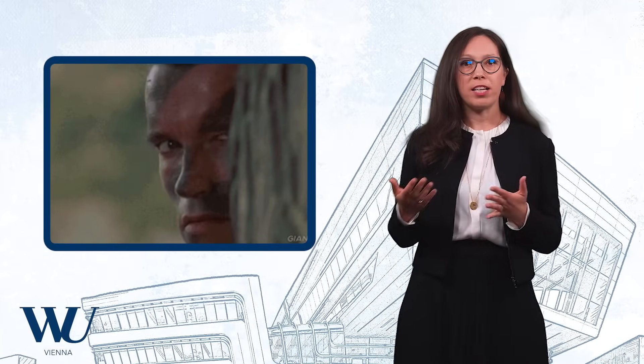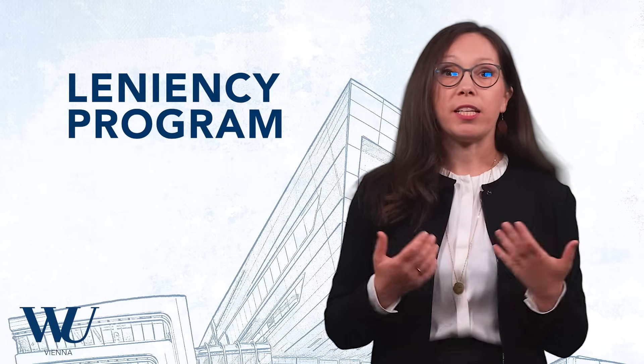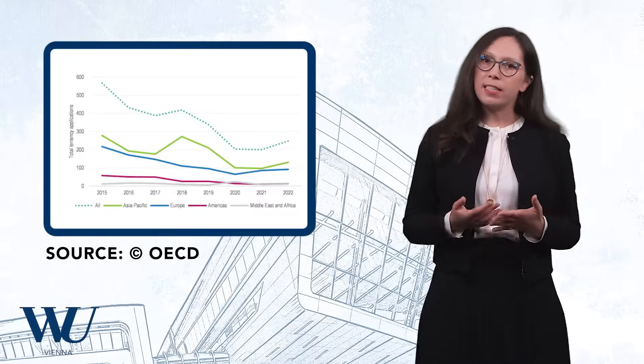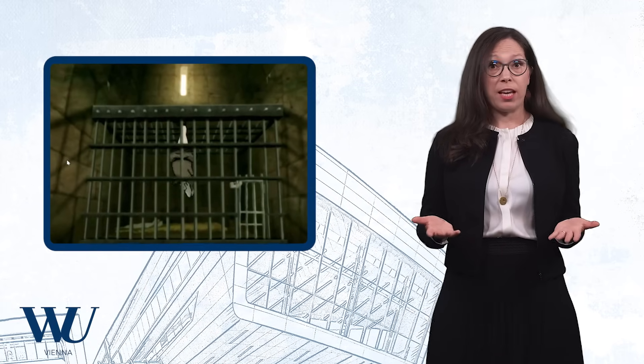Competition authorities are constantly on the lookout for signs of price-fixing and other anti-competitive activity. In the past, one of their most effective tools was the so-called leniency program. When a company approached a competition authority and helped them uncover a cartel, they were given immunity from hefty fines. But worldwide, these leniency applications have been in decline. It seems that cartelists have gotten better at hiding their anti-competitive activity, and that's why competition authorities have to up their game.